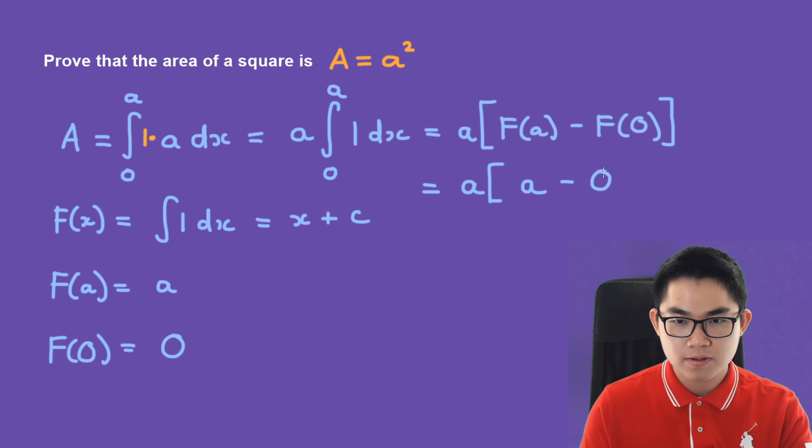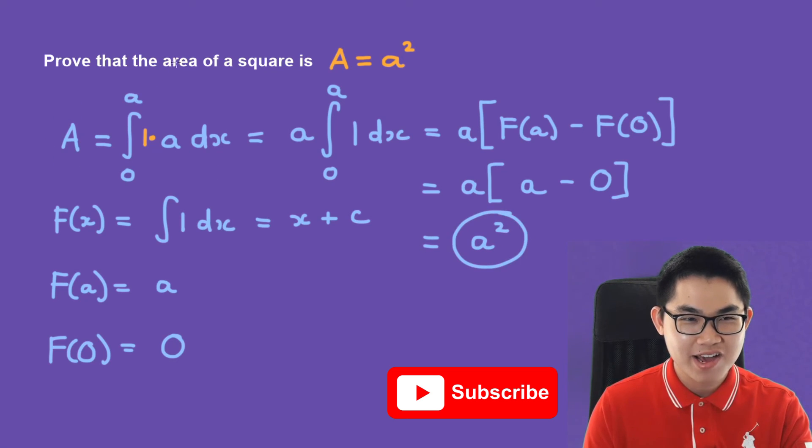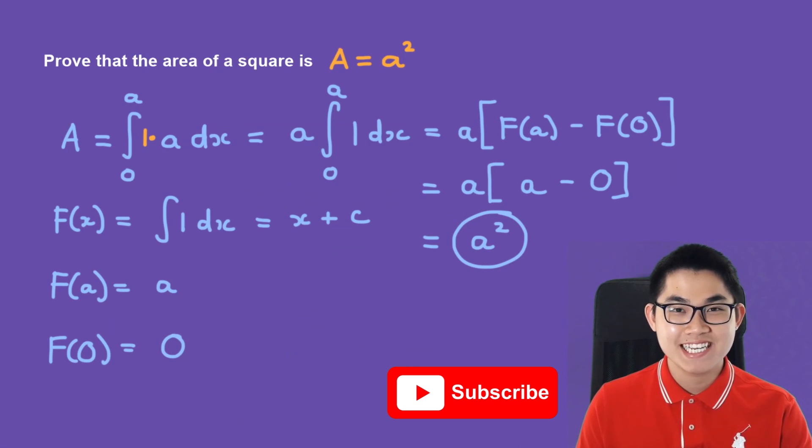So here we have a times f at a which is a minus f at 0 which is 0. So this is a times a which gives you a square. We just proved that the area of a square is a to the power of 2, and that's basically it for today.